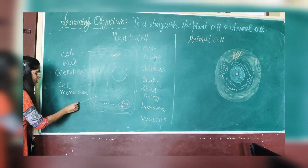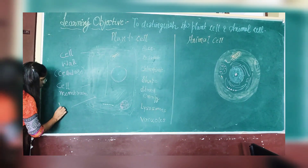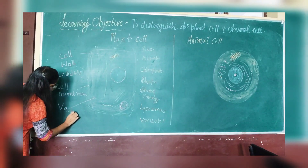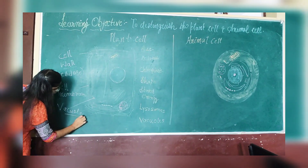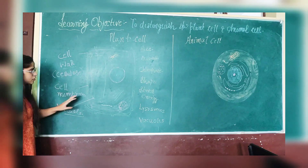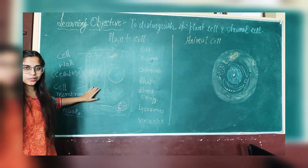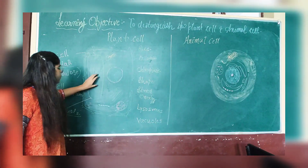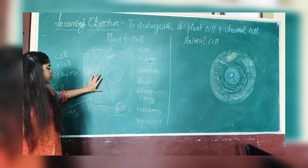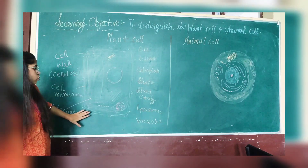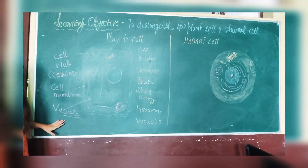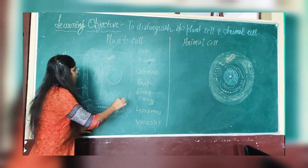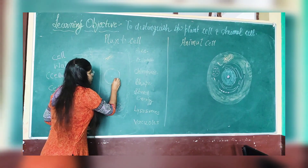This large structure that you are seeing in the cell is the vacuole. The vacuole is a single membrane-bound structure which is present in the plant cell to store the excess of water and salts in the cell.